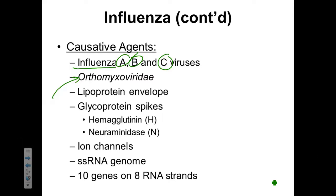The H is for hemagglutinin and N is for neuraminidase. This virion also is going to have some ion channels to help move mineral content in and out of its capsid. It has its genome stored as single-stranded RNA, and it has ten genes located on eight single-stranded RNA strands.